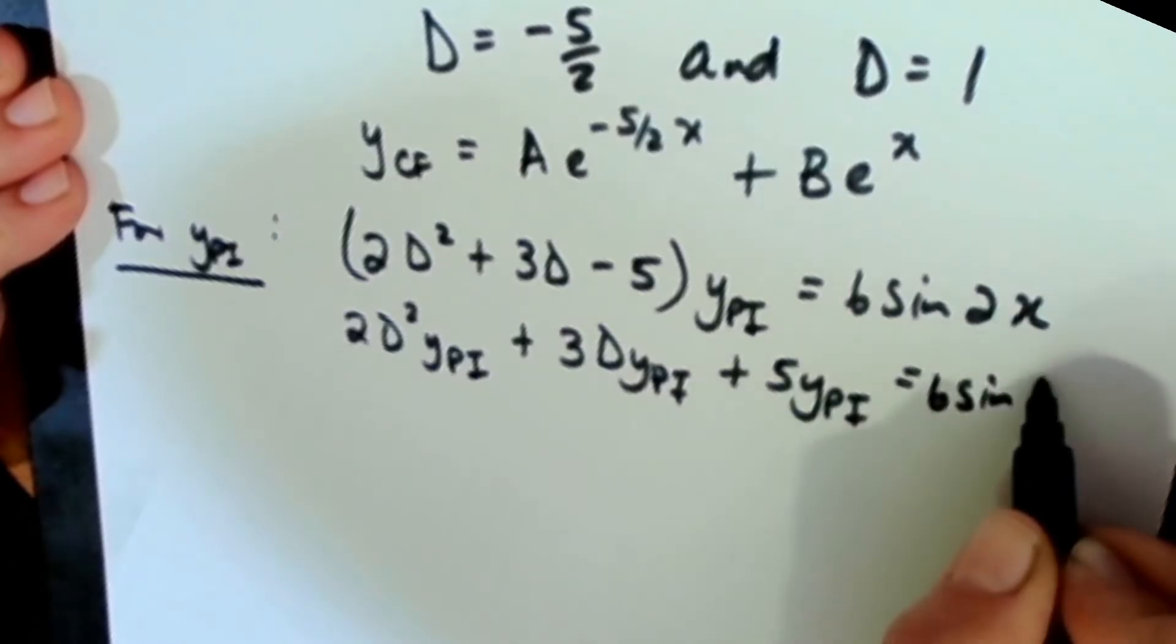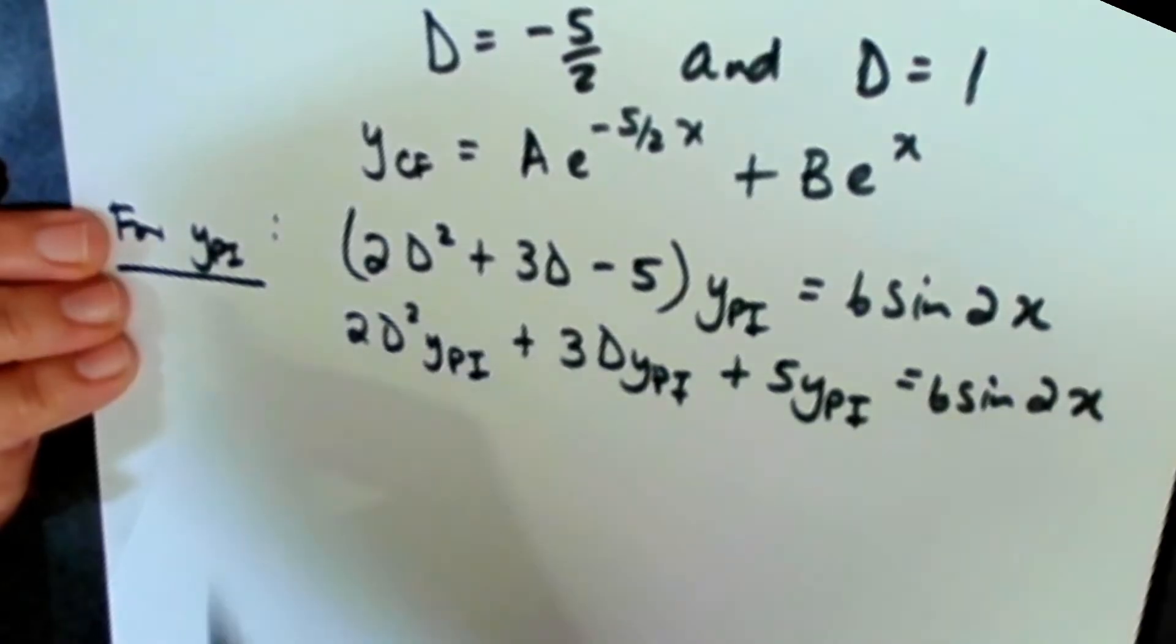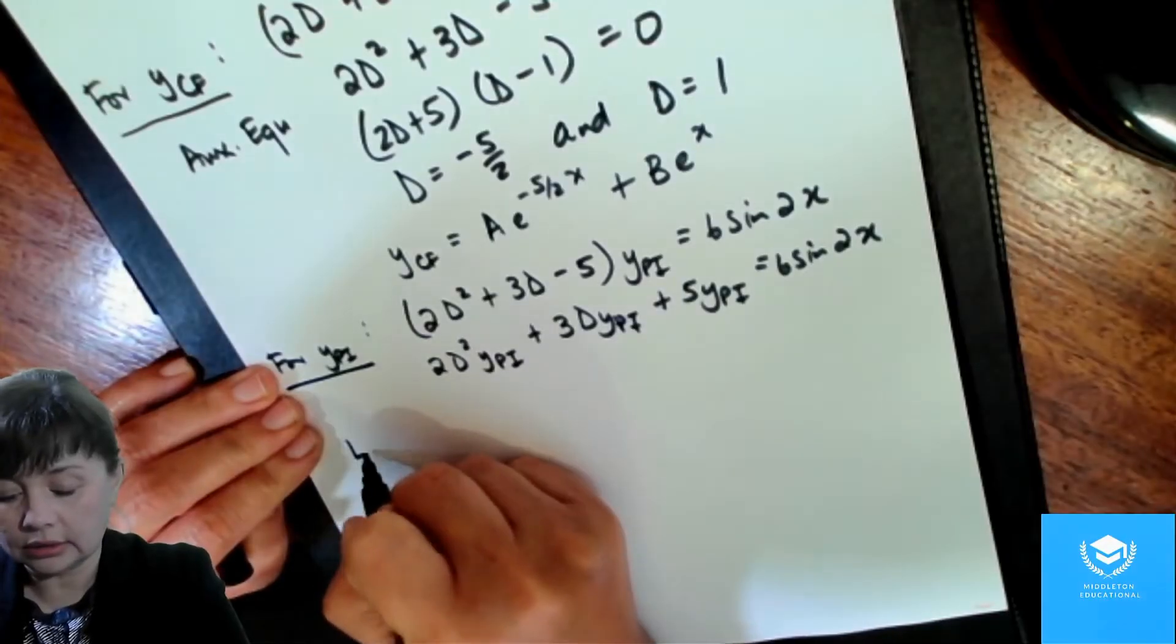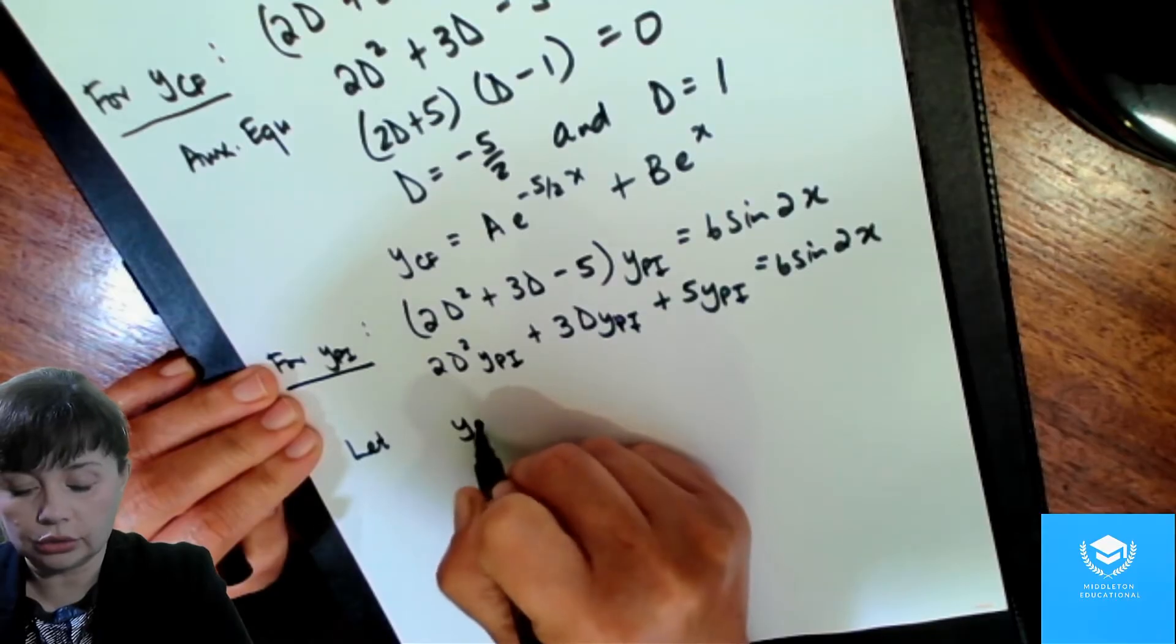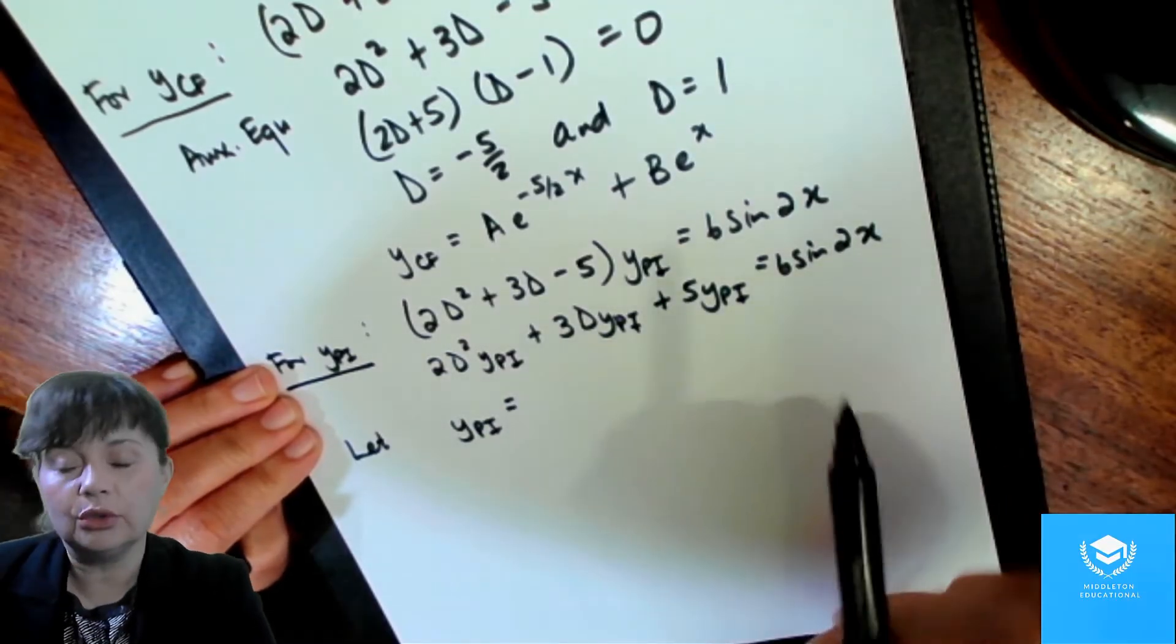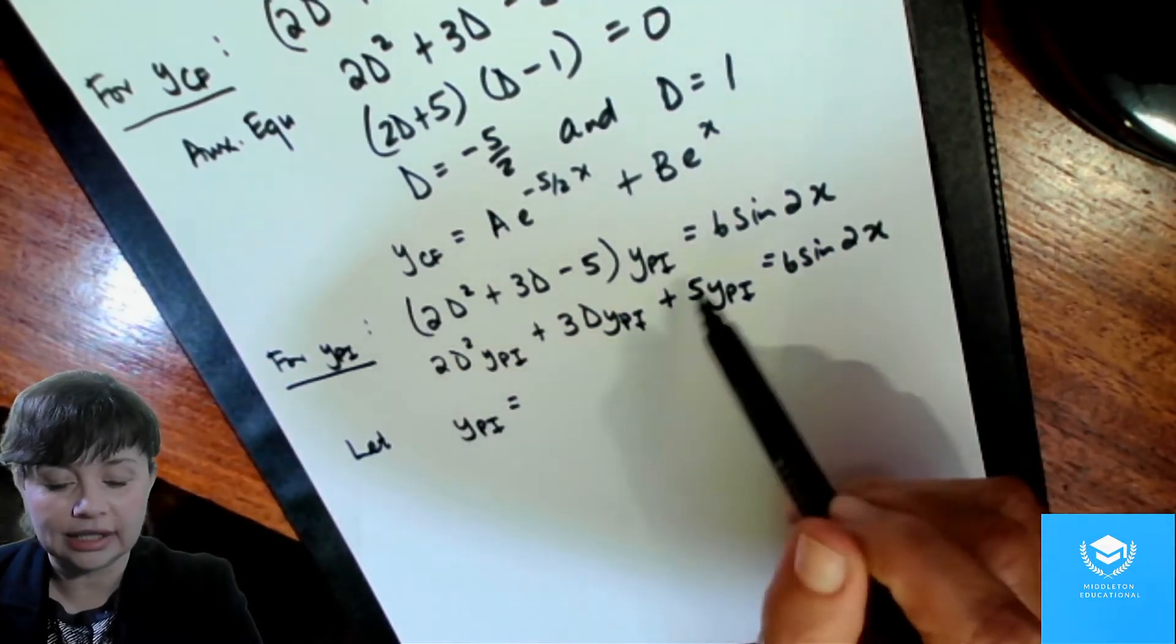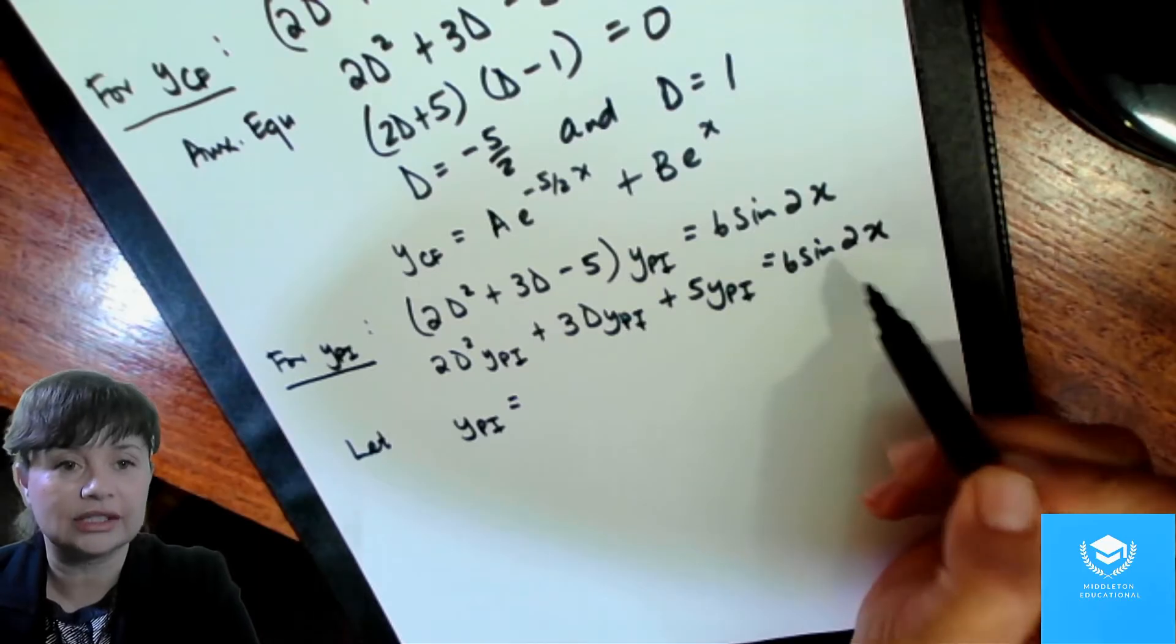So we need to find a function for ypi so that if you find your first derivative and your second derivative and you substitute in, your equation has to balance. So that must all equal to 6 sine 2x. So let's see, what should we choose for ypi? We need a trial function.